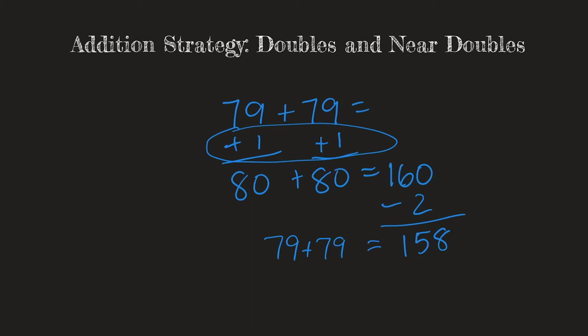So sometimes I love to check my math by using the standard algorithm. So let's do that. 79 plus 79, stacking them on top. 9 plus 9 is 18, carry the 1.